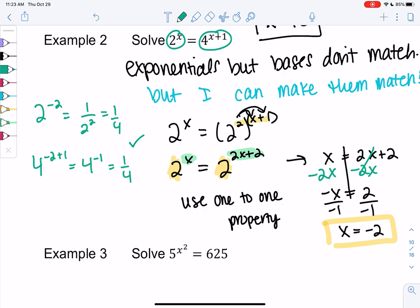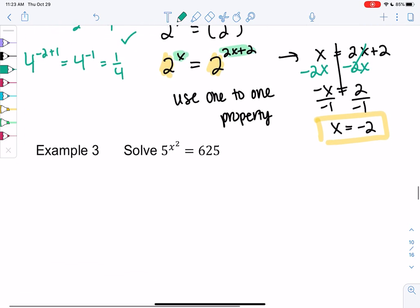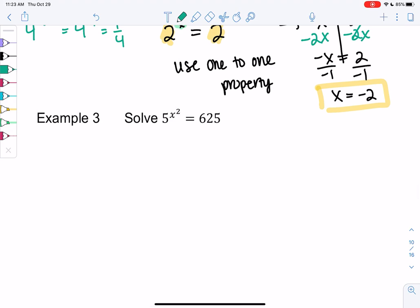Let's try one more where the bases match. So example 3, we have 5^(x²) = 625. They don't quite match, but I think 625 is 5 to some power. So I can make the bases match. So I'm going to leave it as 5^(x²). What is 625?